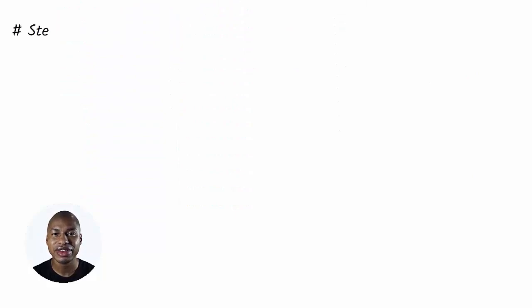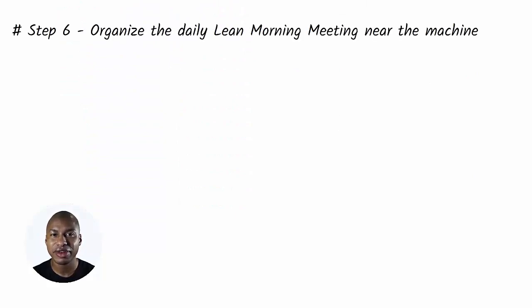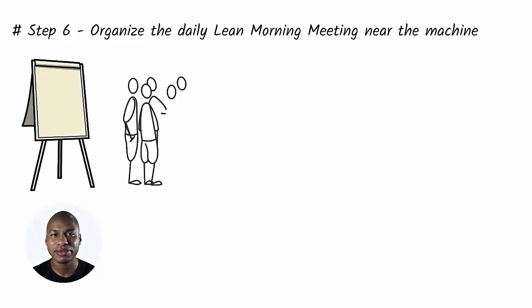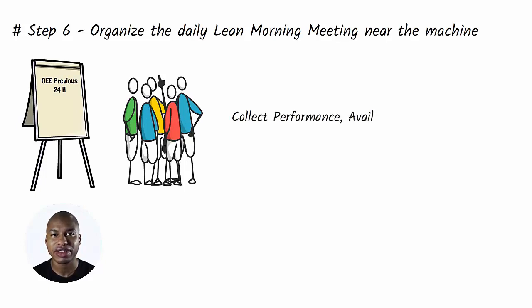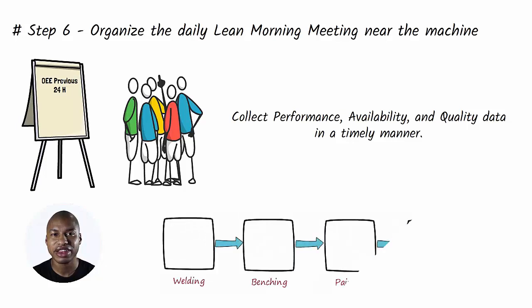Step 6. Recognize the daily lean morning meeting near the machine. Every morning, meet with the work team to discuss the operation of the machine for the previous 24 hours. If you don't know what the lean morning meeting is, watch the videos that I leave links to in the description. You are only now beginning to collect performance, availability, and quality data in a timely manner. Remember to also record the daily machine output and the daily finished product output of the value stream you are watching.